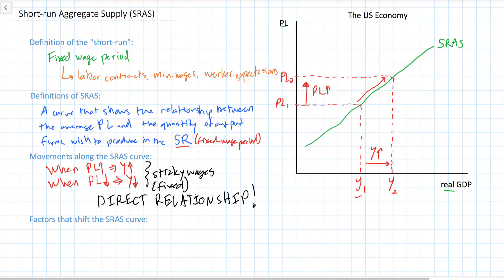In future videos we'll talk about long-run aggregate supply and alternative views of aggregate supply, which account for what we call the variable wage period, when wages do adjust to the price level. However, the short-run aggregate supply curve is easy to understand — it reflects the law of supply from microeconomics. The explanation for why it is upward sloping is that workers' wages do not quickly adjust to the price level, so workers will be hired when prices rise and output will increase, and when prices fall workers will be fired and output will decrease.